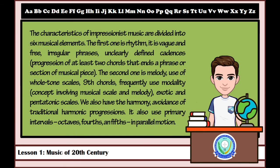The characteristics of Impressionist music are divided into six musical elements. The first one is rhythm — vague and free, irregular phrases, with unclearly defined cadences, which are progressions of at least two chords that end a phrase or section of a musical piece. The second one is melody, which uses whole tone scales, ninth chords, frequently used modality — a concept involving musical scale and melody — as well as exotic and pentatonic scales.